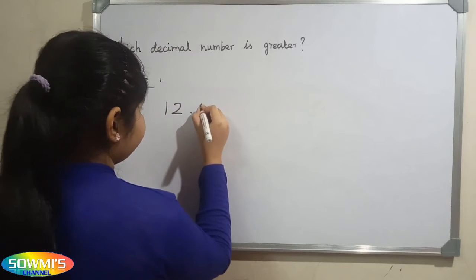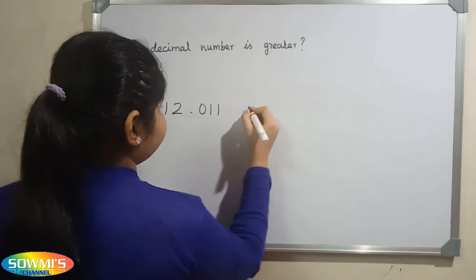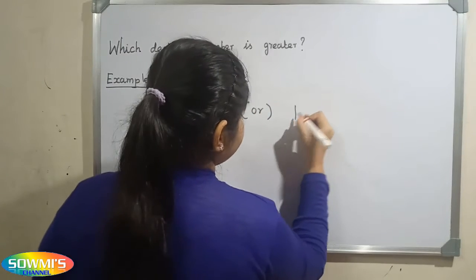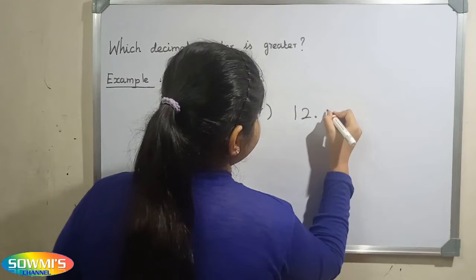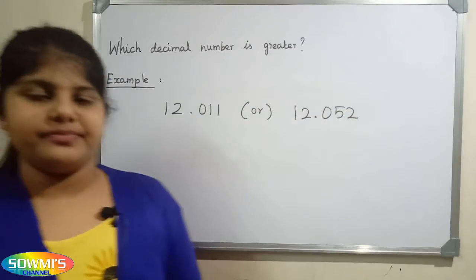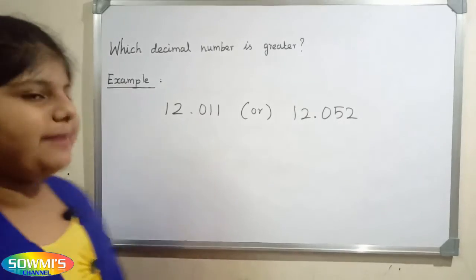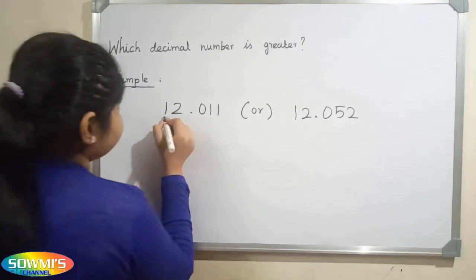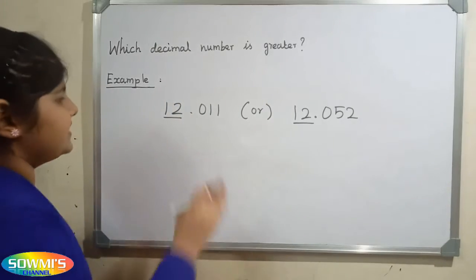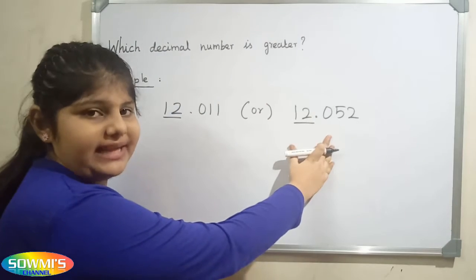12.011 or 12.052. Here the whole number part is same, so next we will go to the decimal part. Now we will compare the decimal part.